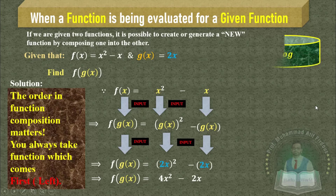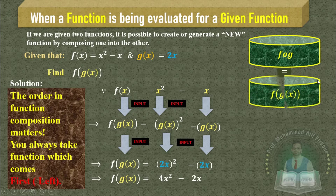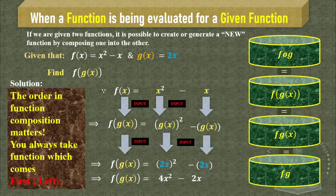You can present this composition of function in different notations. You can write it as f∘g — it's not a multiplication sign. This can also be written as f∘g(x), or as fg(x), or simply as fg.